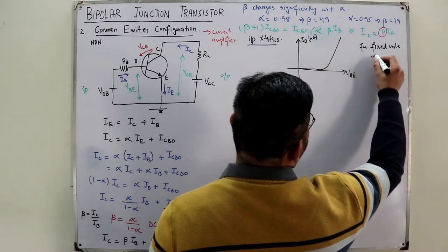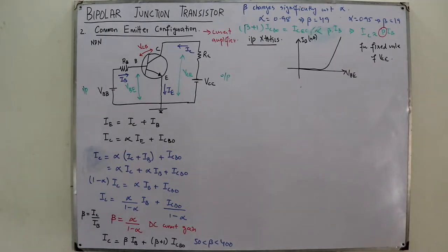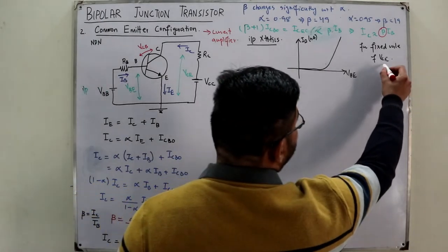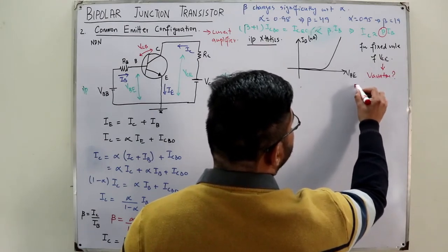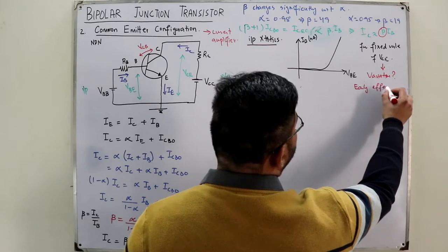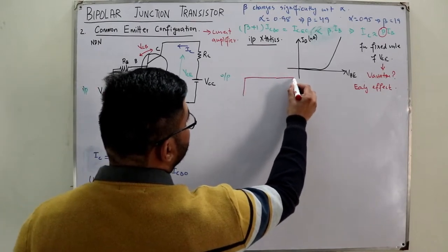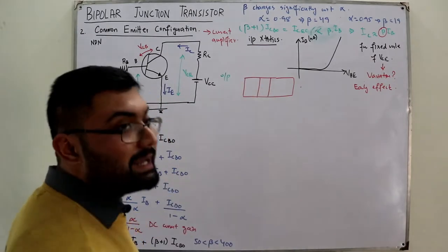This input characteristic is plotted for a particular fixed value of VCE. If you change VCE, the curve shifts — this effect is the base-width modulation, also known as the Early effect. Variation with respect to VCE comes from the Early effect, which involves base-width modulation.